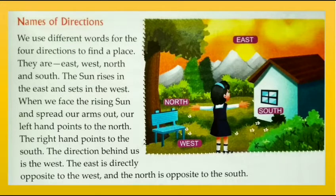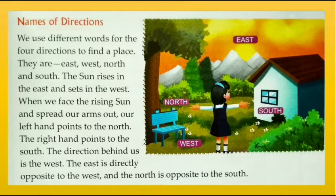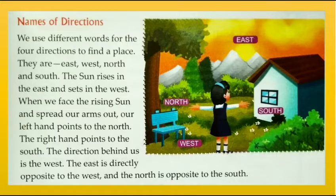Names of directions: we use different words for the four directions to find a place — they are east, west, north, and south. The sun rises in the east and sets in the west. When we face the rising sun and spread our arms out, our left hand points to the north and the right hand points to the south. The direction behind us is the west. East is directly opposite to the west, and north is opposite to the south. You can see the directions in the picture given.